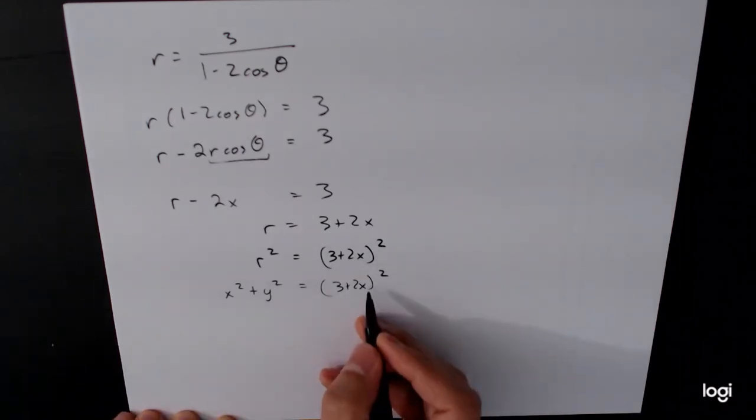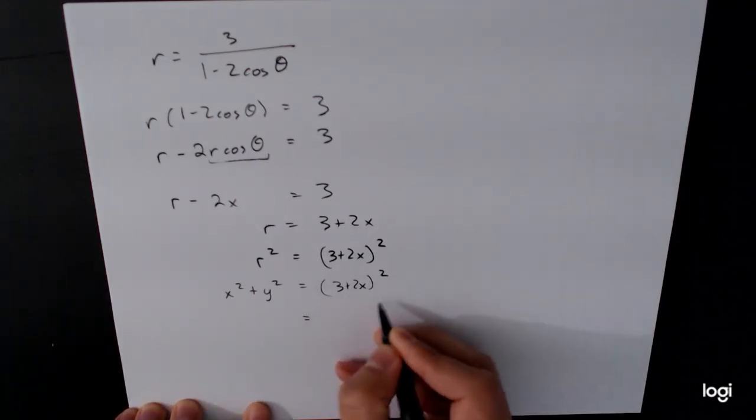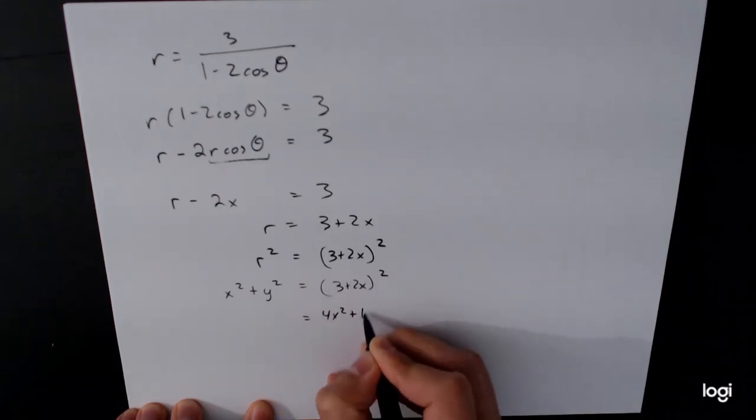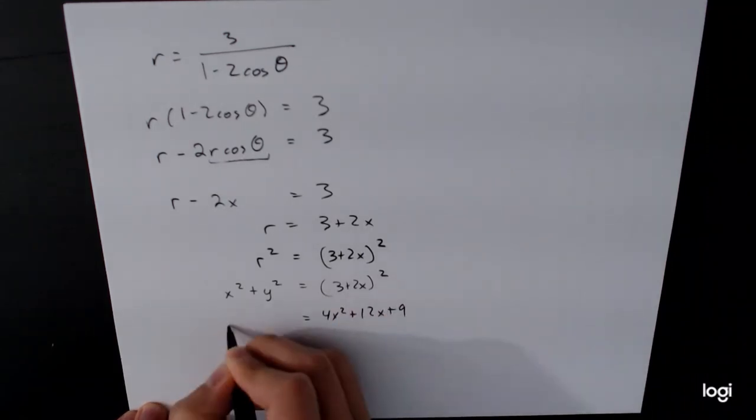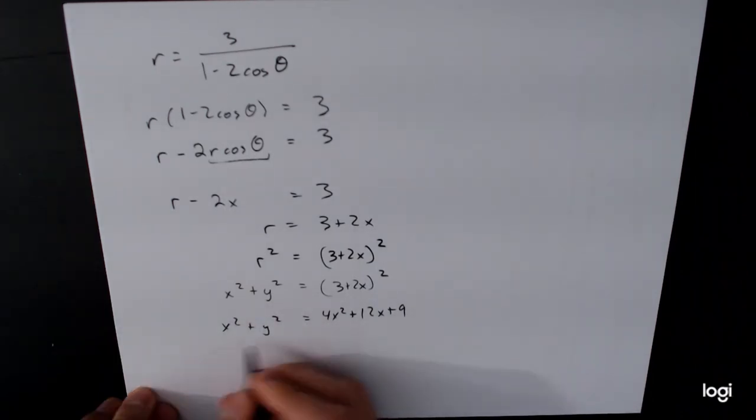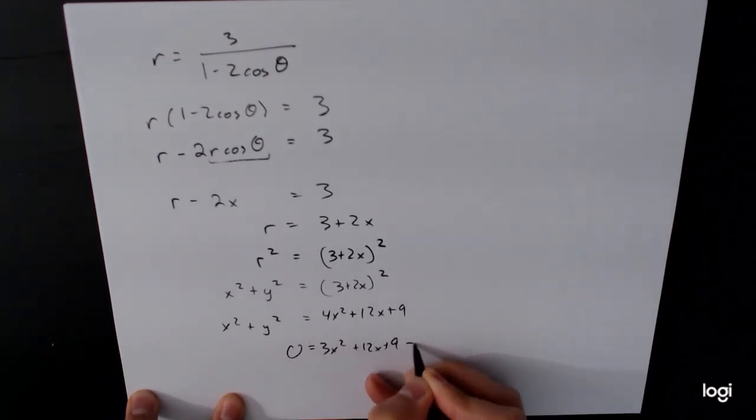At this point, I would say you could leave it like this, but in theory you could actually do a little bit more work with it by multiplying this right hand side out. 4x squared plus 12x plus 9 is equal to x squared plus y squared. And you can move the terms around and sort of get more information out of this. It's going to be 3x squared plus 12x plus 9 minus y squared.